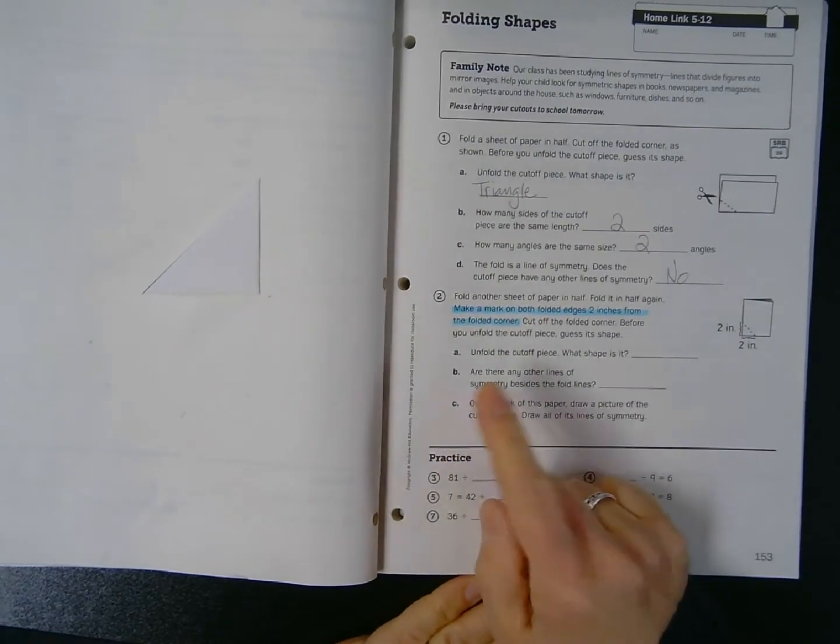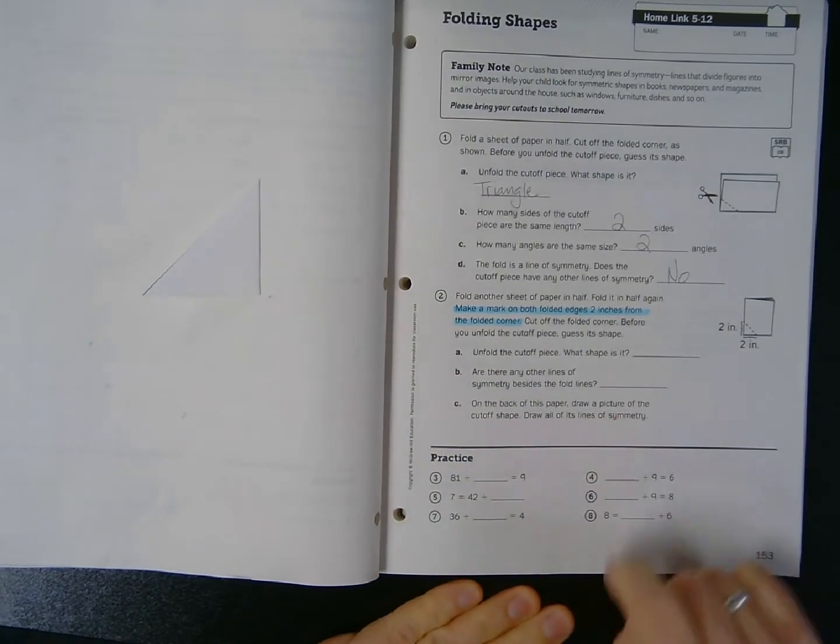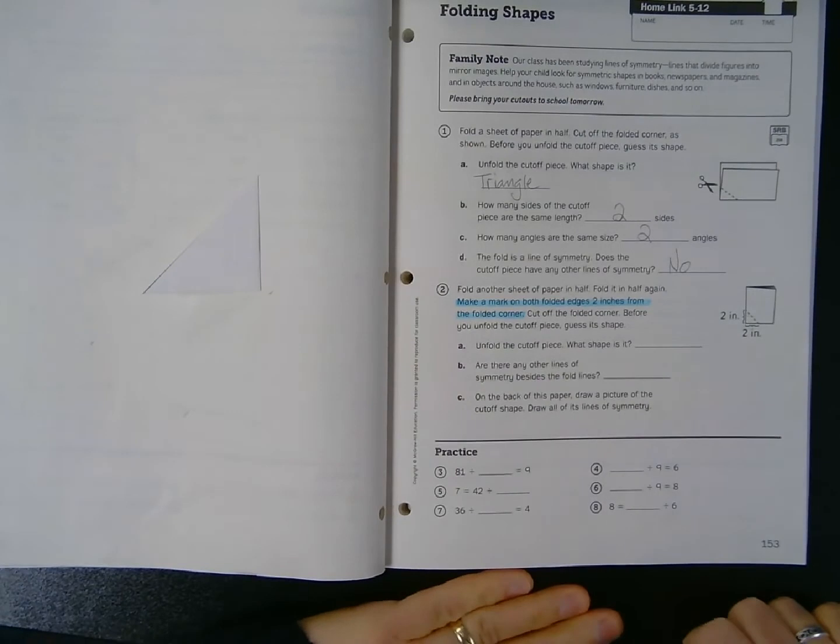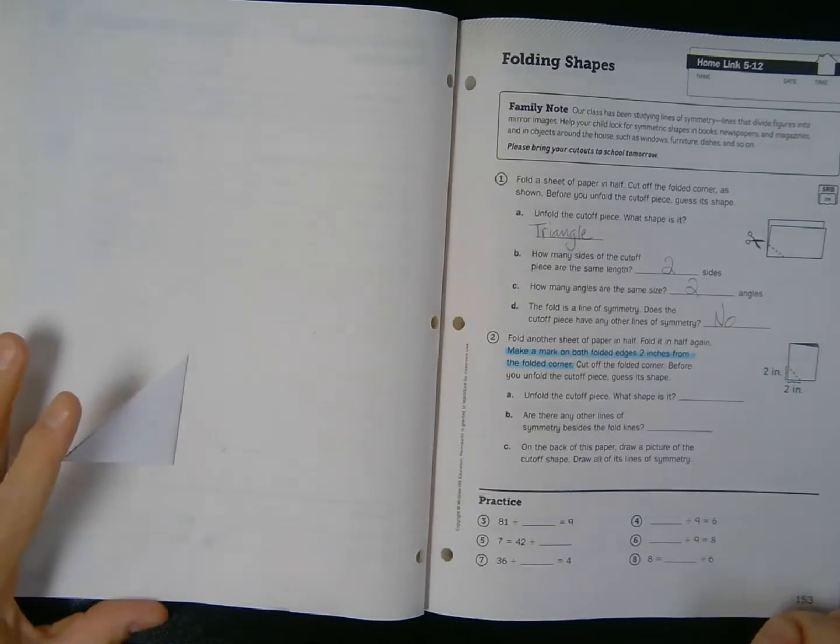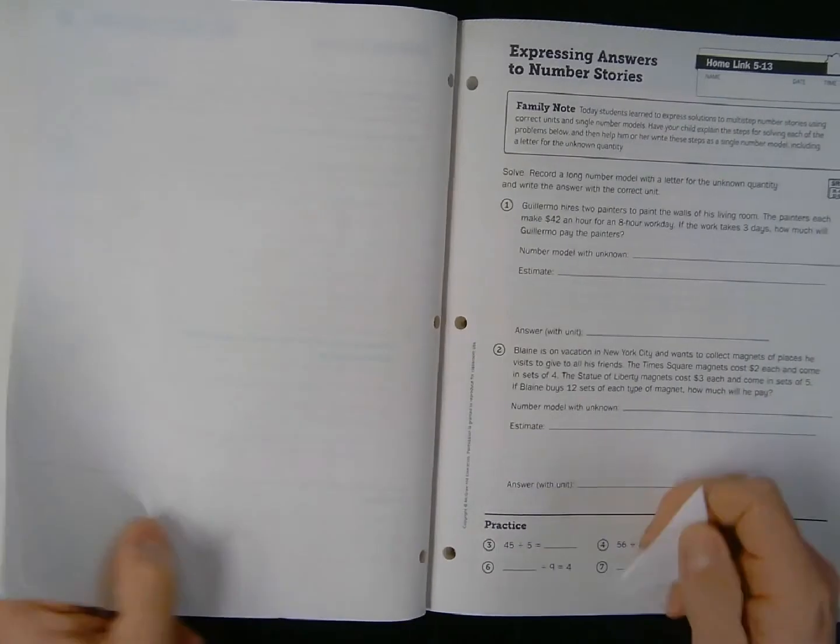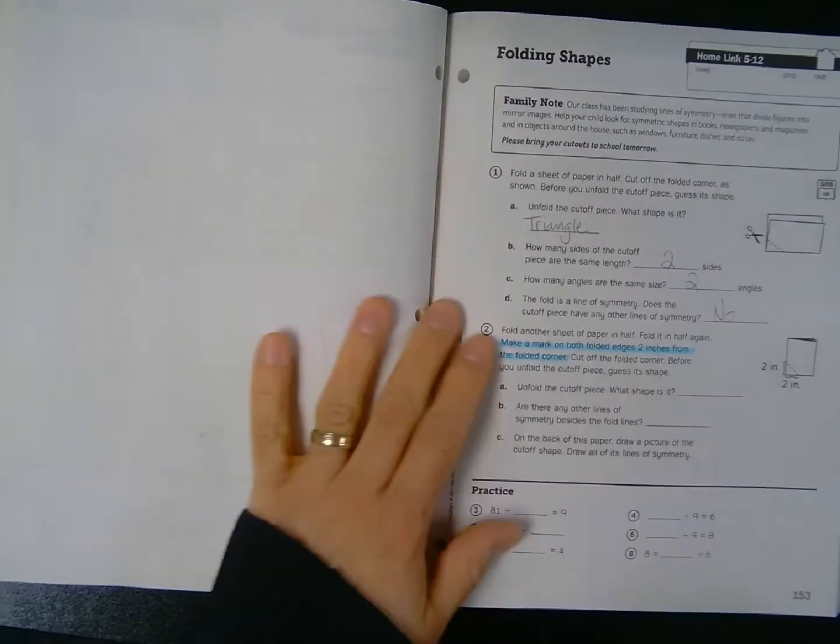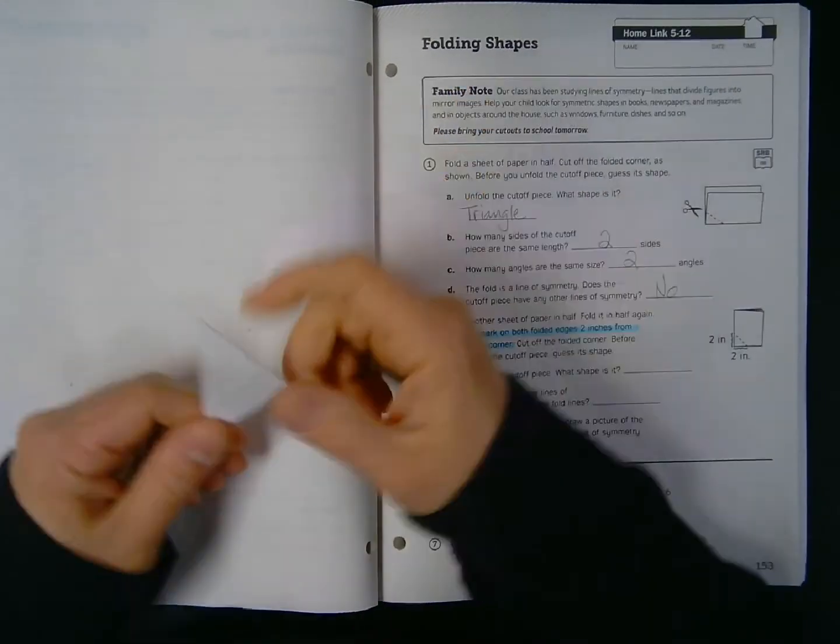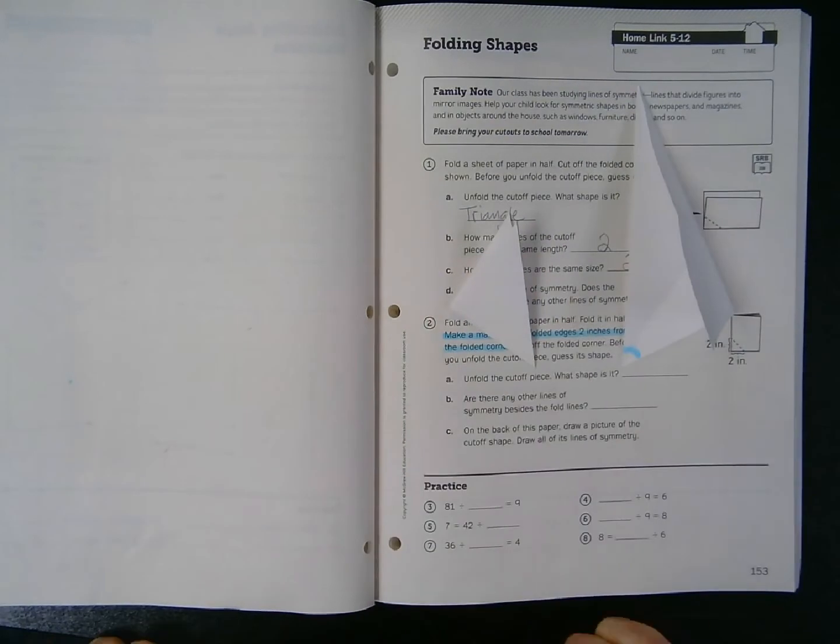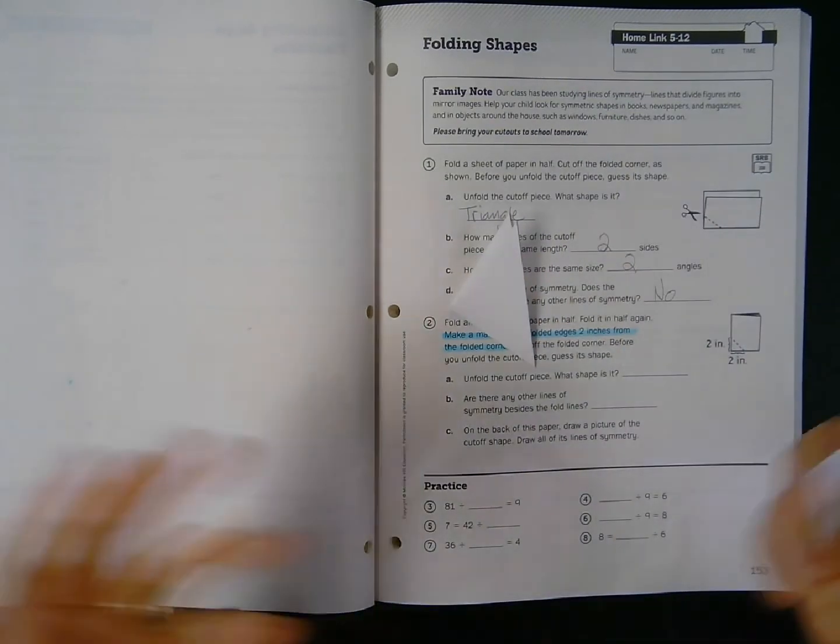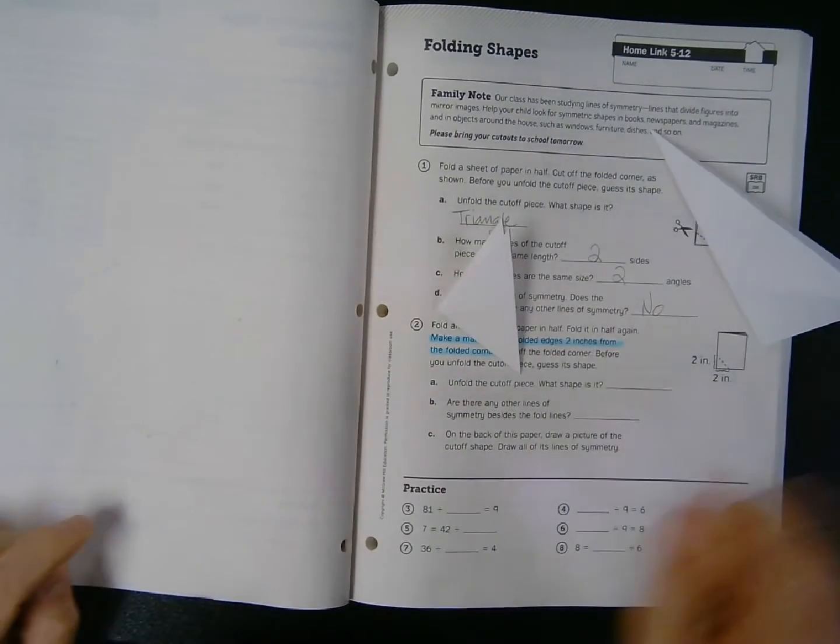And then once you've done, you're done unfolding it, it'll ask you to draw a picture of the cutoff shape on the back of this page paper and then draw all of its lines of symmetry. Now you could actually use the back side of the previous sheet if you keep your home links all in the notebook. But if you don't, you can just, like they said, use the back of this sheet. These are designed to have scratch work paper provided. So you'll unfold it, you'll trace it or draw it, and then show all the lines of symmetry. And then you're going to bring in these pieces to school tomorrow so you can talk about them with your class if you are live in person tomorrow. If you're doing this from home and you're doing this virtually, you can just show your pieces to the camera itself.